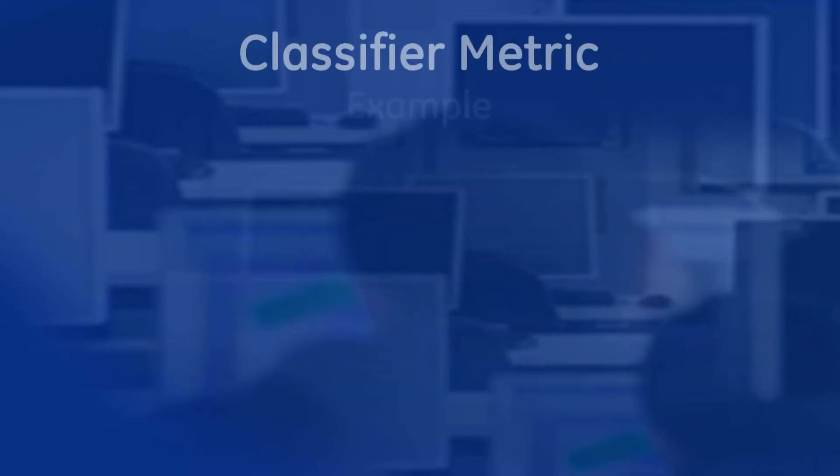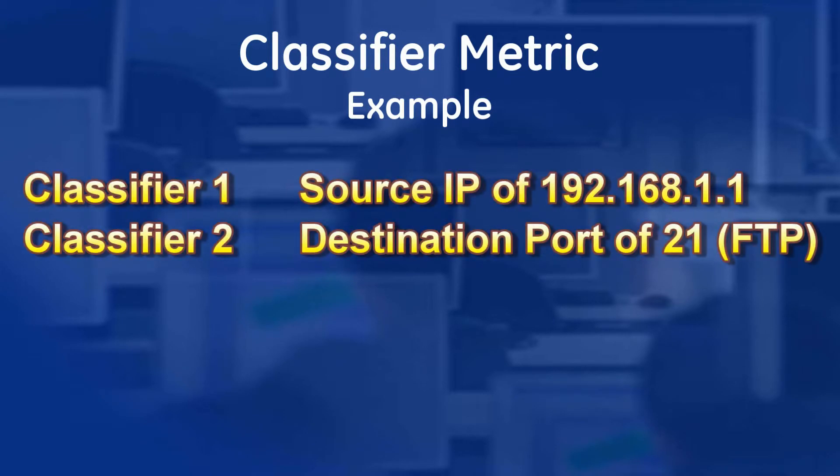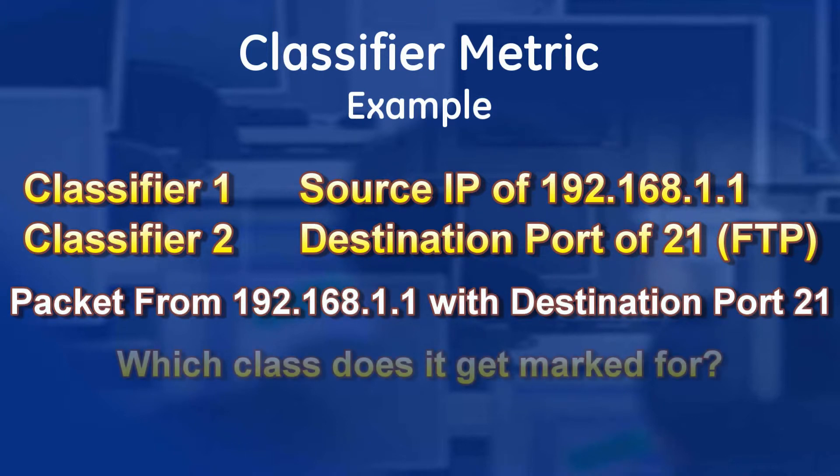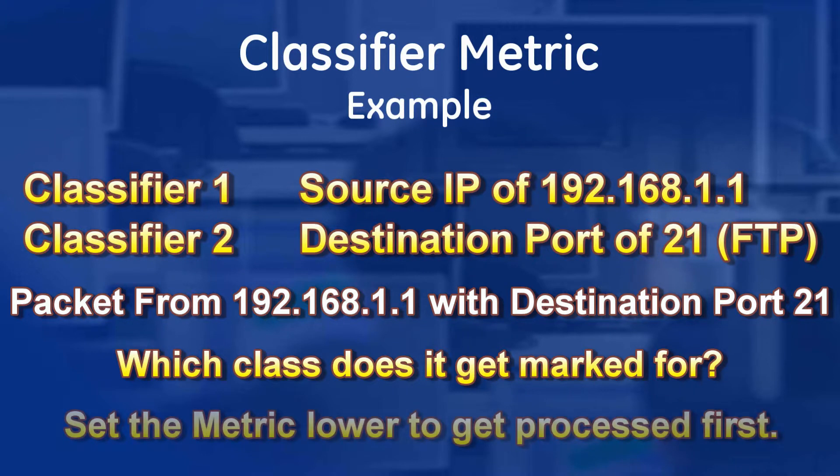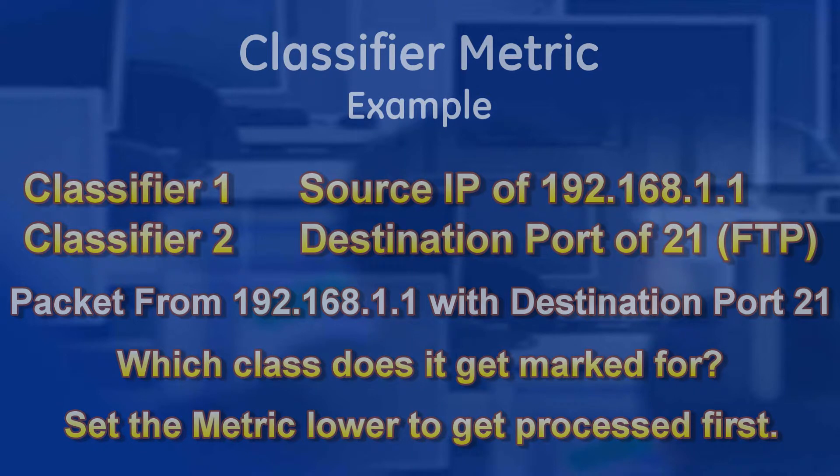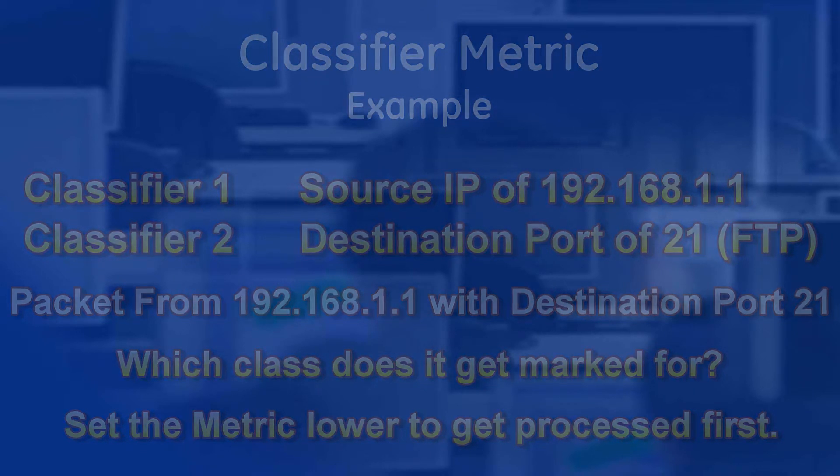So what happens if a packet or frame matches two classifiers? Let's look at an example where we have two such classifiers. The first is set to identify any traffic with a source IP of 192.168.1.1. And the second classifier is looking for any traffic with a destination port of 21. This is also the FTP port. Which class will it be marked for? This is where the metric comes in handy. The lower the metric value on the classifier, the earlier it will be processed. By default, the metric is set to a value of 10. So as long as the classifier you wish to be processed first is set to a lower value, then it will be marked and sent to the proper class.